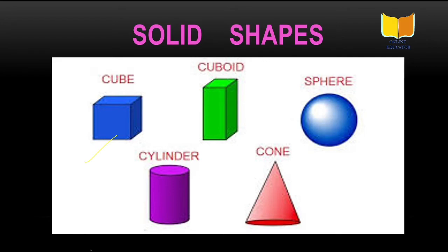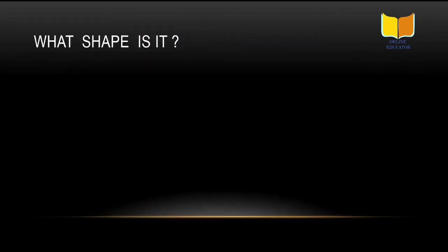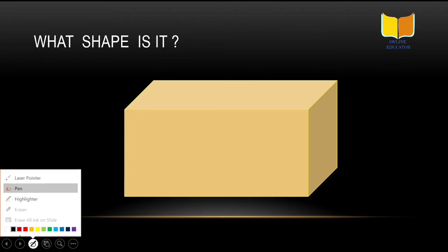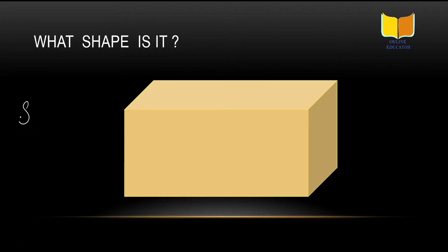Some examples of solid shapes are cube, cuboid, sphere, cylinder, and cone. These are some of the examples of solid shapes which we are going to study today. Now see this shape. You need to tell me how many sides, how many corners. What we are going to discuss: sides, corners (also called vertex), and edges. These three things we are going to study in solid shape.